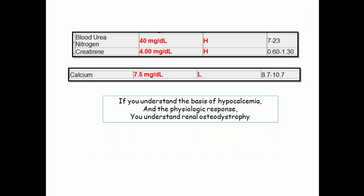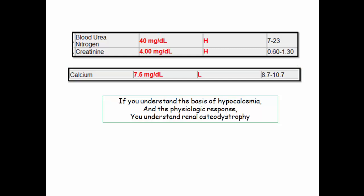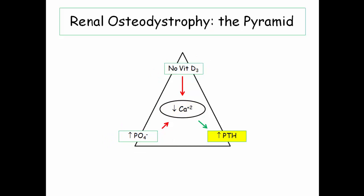Here is a patient with chronic kidney disease. Note the BUN-to-creatinine ratio of 10 to 1, reflecting intrinsic renal disease, not pre-renal azotemia. The patient has a low calcium. On the top of the pyramid, you'll note the failure of vitamin D synthesis. On the left, hyperphosphatemia. These two physiologic derangements result in a decreased serum calcium level. On the right, the physiologic response to the low serum calcium: secondary hyperparathyroidism, which occurs in response to the chronically depressed serum calcium.